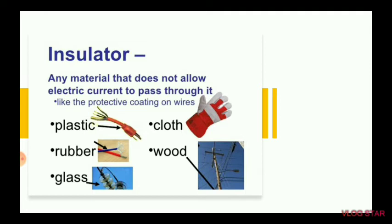An insulator is a material that does not allow electric current to pass through it. You must have seen on wires there's a plastic or rubber covering, so that when you're handling them you don't get the current. There are many insulators such as plastic, rubber, glass, cloth, and wood.